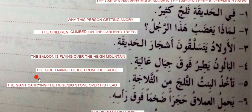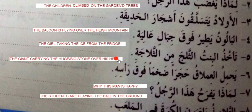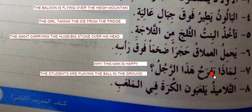Yahmilu al-imlaq hujran — hujra means stone — zahman, very big or huge — fawqa ra'sihi, over his head. So the giant is carrying the huge stone over his head. Limaza yafrah — fara means happy — why is this man happy? Al-talamiz yalabuna al-kurra fi al-malab — the students are playing ball in the ground; malab means ground.